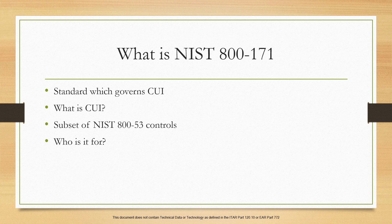NIST 800-171 is really all about safeguarding that CUI and that data. It's really a subset of NIST 853 controls, and we'll dive into that a little bit more later in the video. This standard is applicable to both contractors and subcontractors working on any government contract that handles CUI — that controlled unclassified information.